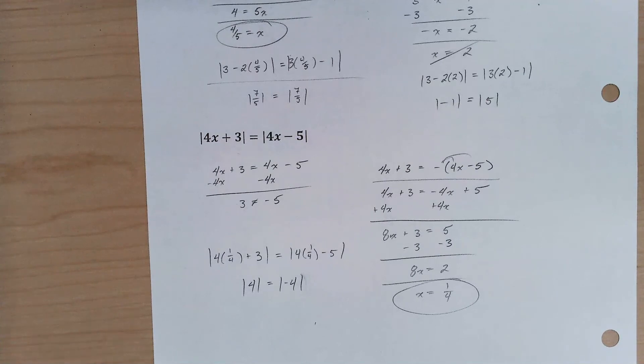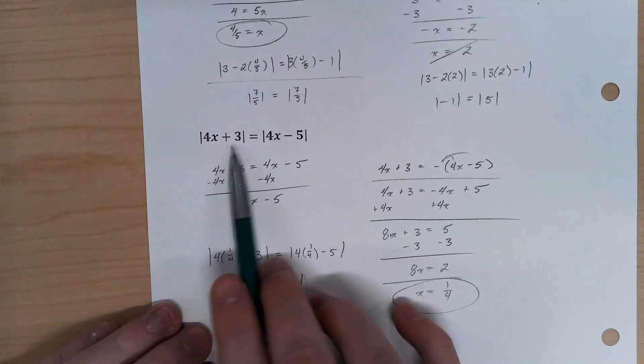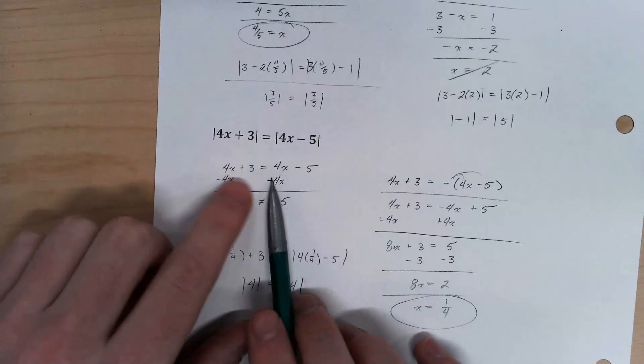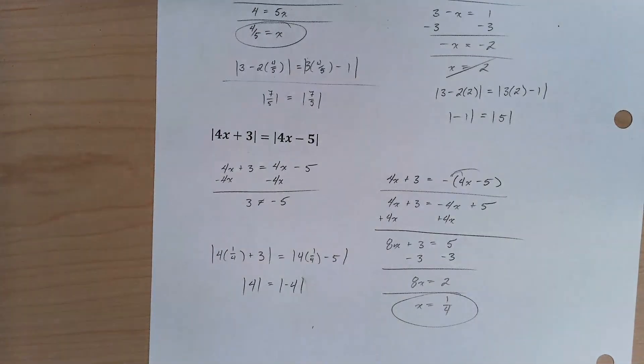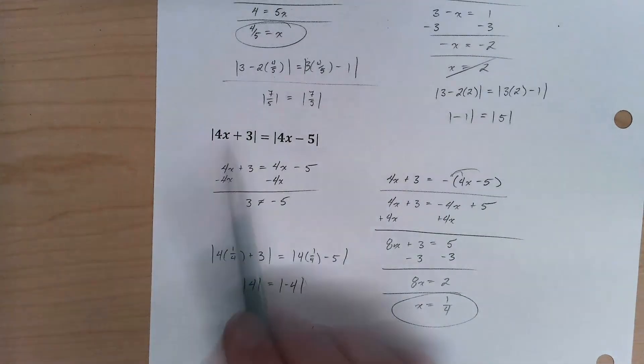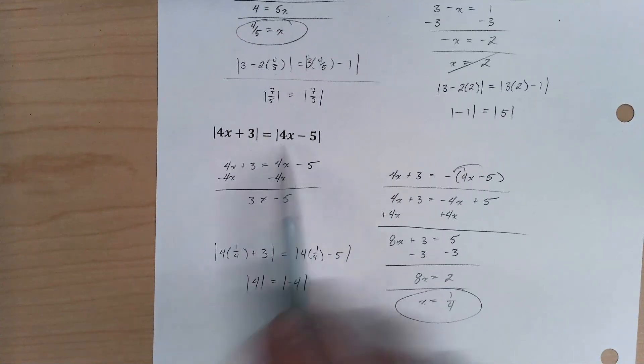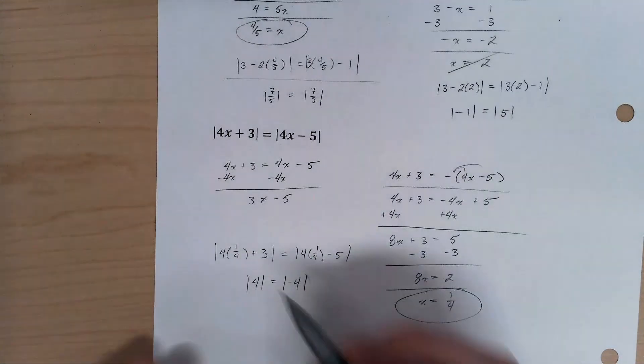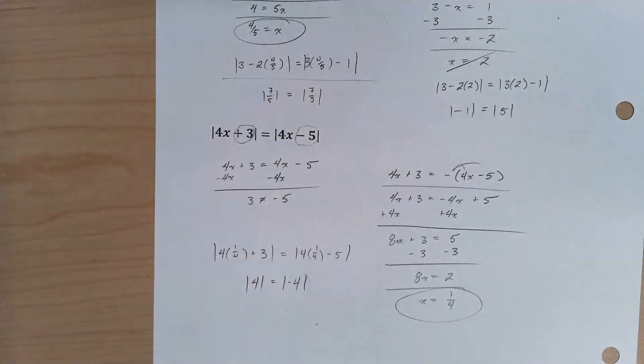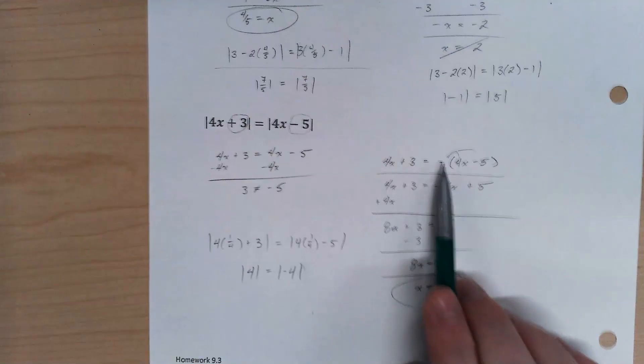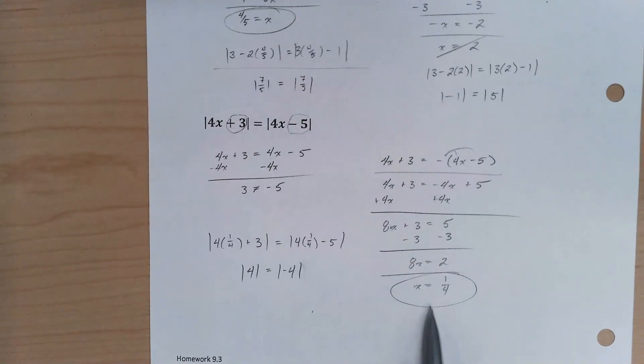So kind of an interesting thing that you might see in this is that without the absolute values, so if I just had this, these two are never going to be equal those insides. Because if you think about it I don't know exactly what 4x is, but I do know that there's not a number in the world that if I add 3 to it and subtract 5 from it I'm going to somehow end up in the same place. But with the absolute value and the potential of this negative I can end up with a solution.